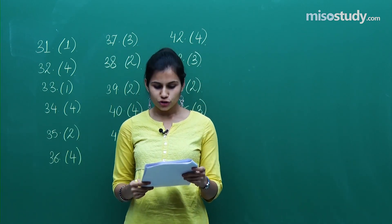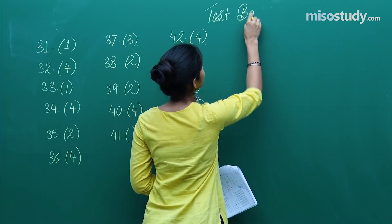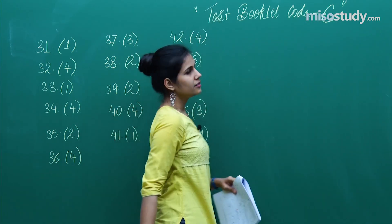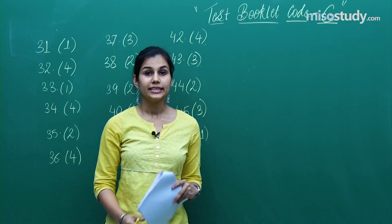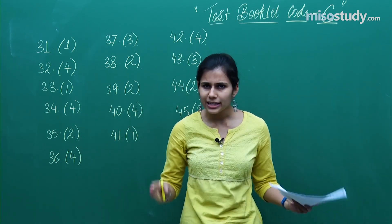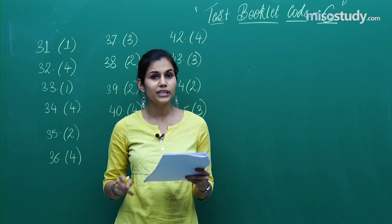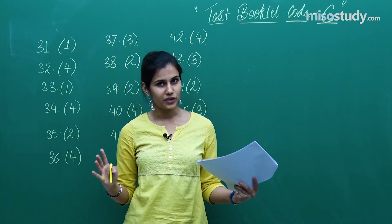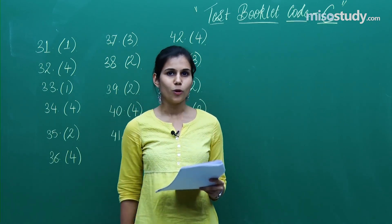Just to note, we are working on the answer keys for test booklet code C — do not get confused with the answers for the A, B, or D booklets. Question 47 is from 3D geometry, a big chunk of coordinate geometry from the 12th standard, asking you the length of the projection of a line segment joining two points on a certain plane. Direct usage of the concept of planes — the answer is √(2/3), which is the third option.